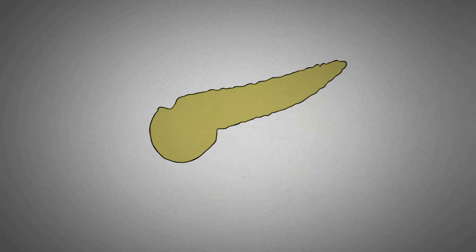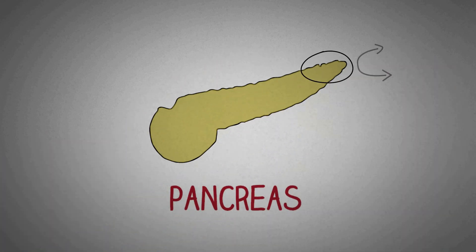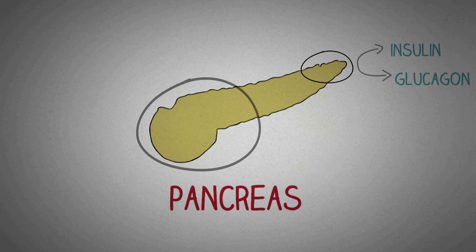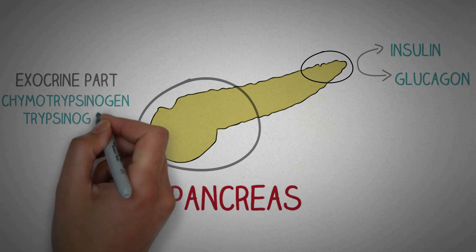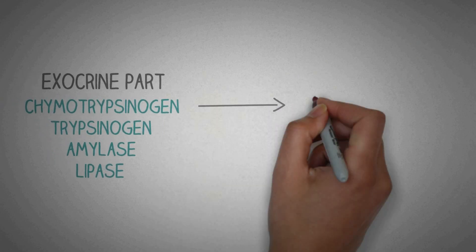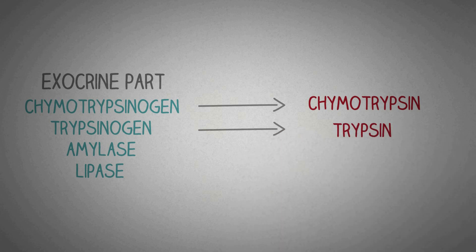The pancreas which lies behind the stomach has both an exocrine as well as an endocrine part. The endocrine portion produces insulin and glucagon. Click on the card above to learn more about the endocrine system. The exocrine part however secretes important digestive enzymes like the chymotrypsinogen and trypsinogen also amylase and lipase. Chymotrypsinogen is converted into chymotrypsin and trypsinogen is converted into trypsin which are the active form of these enzymes. And these enzymes digest proteins. Amylase digests carbohydrates whereas lipase digests fats.